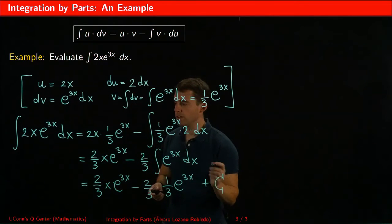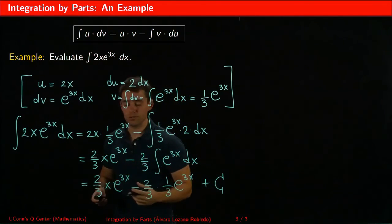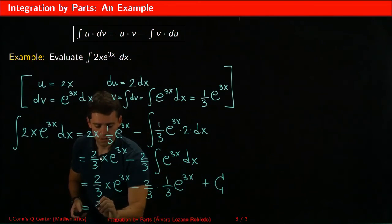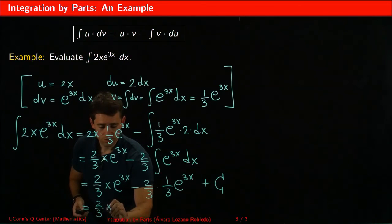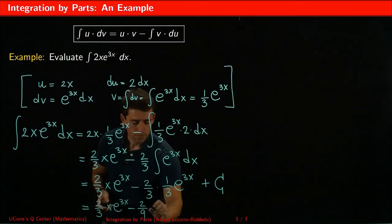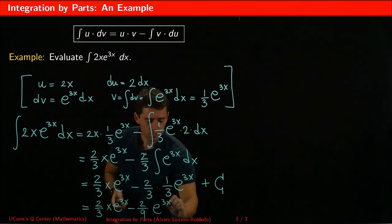Now we do want the constants because we want all the antiderivatives of this function. And finally we can simplify this a little bit. This is 2 thirds of x e to the 3x minus 2 ninths of e to the 3x plus constants.